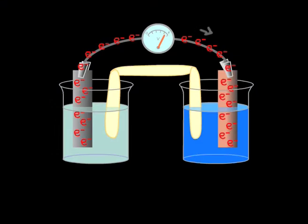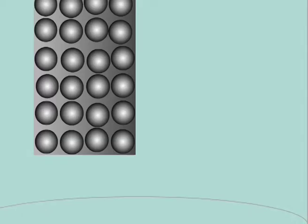This drags electrons from the wire, which in turn drags them from a zinc atom in the lattice. When the zinc atom loses two electrons, it becomes a zinc ion. Its positive charge repels it out from the metal lattice into the surrounding solution.